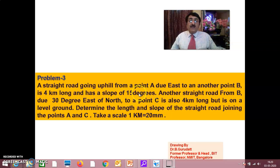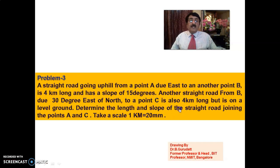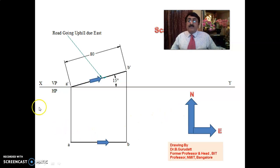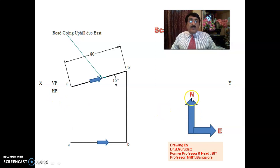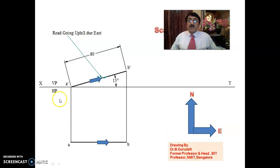See here carefully, we will not do it fast, we will do it slowly. First we will worry about only this. You draw the X-Y line, VP and HP. In the top view, this is north, this is east. When this is north, this is south, this is west.